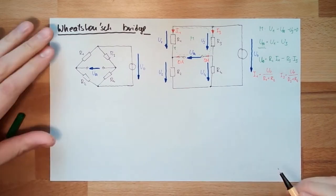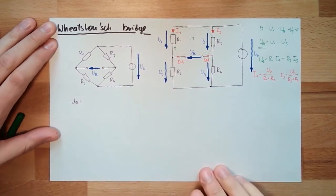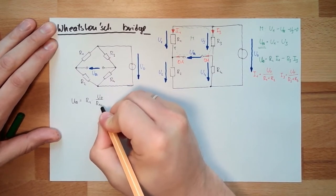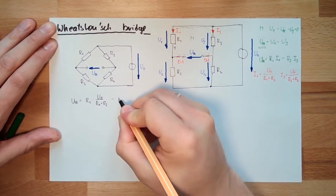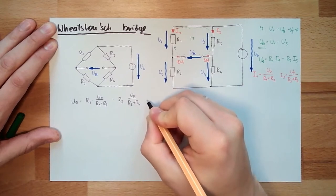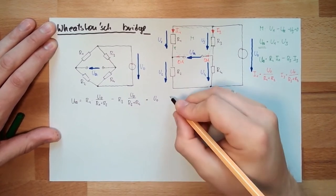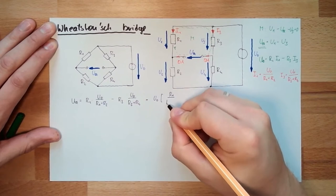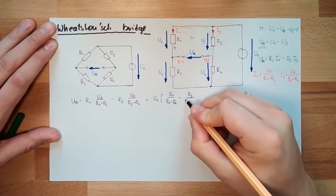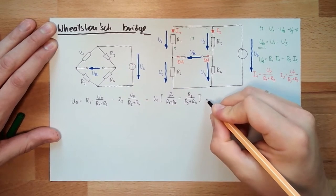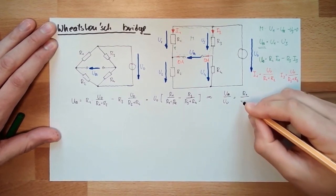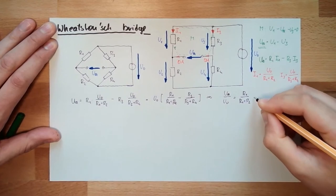I can insert those into this equation and we get UA equals R1 multiplied by U0/(R1+R2) minus R3 multiplied by U0/(R3+R4). I can factor out U0, and it looks like this: UA equals U0 times [R1/(R1+R2) minus R3/(R3+R4)].